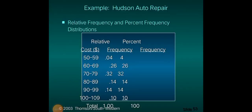Notice that the column for relative frequency and the column for percent frequency are essentially the same — the only difference is that relative frequency is expressed as a decimal to two decimal places, while percent frequency is expressed as a percentage.